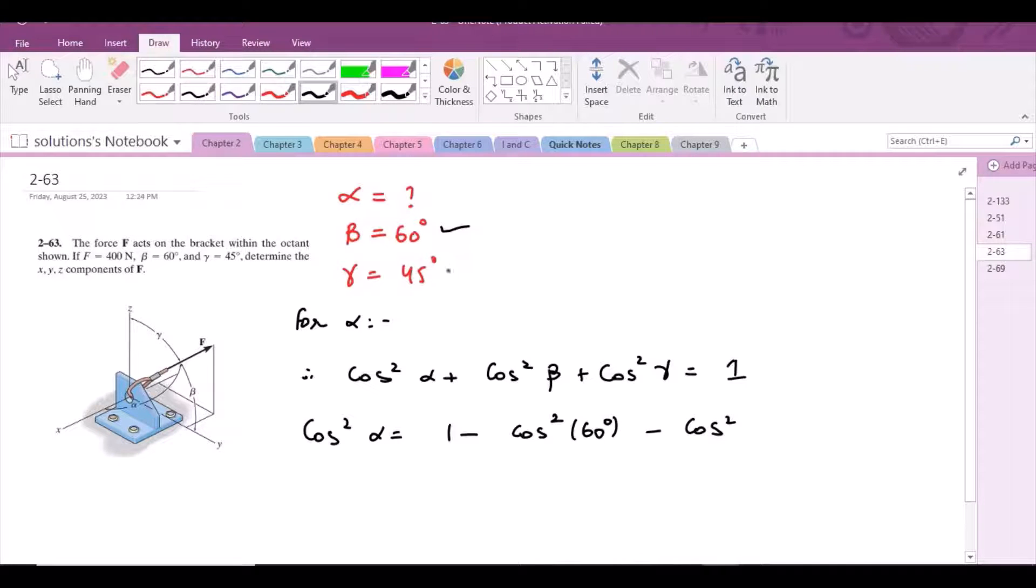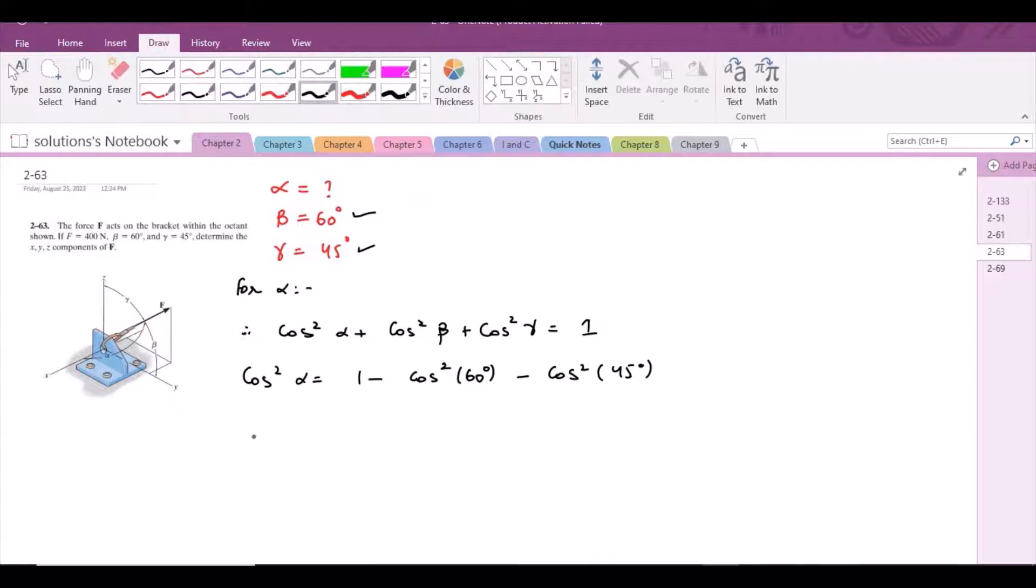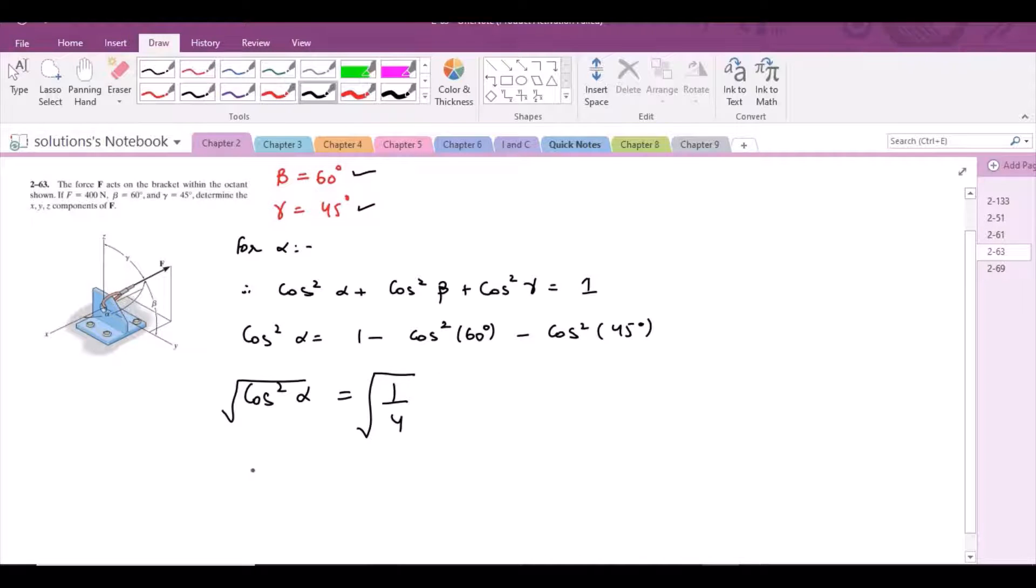Gamma is 45 degrees. After solving it, cos²α becomes 1/4. When I take the square root on both sides, I get two answers. So cos α = ±1/2.